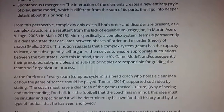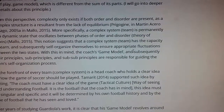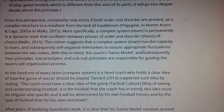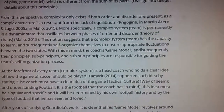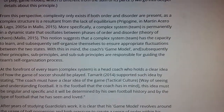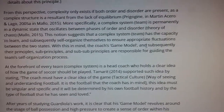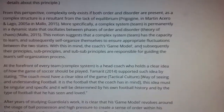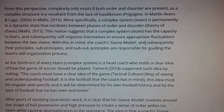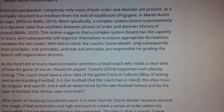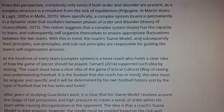From this perspective, complexity only exists if both order and disorder are present, as a complex structure results from a lack of equilibrium. A complex system team, as described by Prigogine and Martín Acero, is permanently in a dynamic state that oscillates between phases of order and disorder — the theory of chaos.